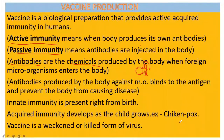For example, the chickenpox vaccine. Chickenpox antibodies are not initially present in our body, but when we take the vaccine, the antibodies get developed in our body against chickenpox. In short, vaccines are nothing but the weakened or killed form of a virus. How vaccines are produced, I am going to explain now.